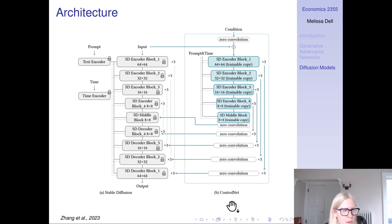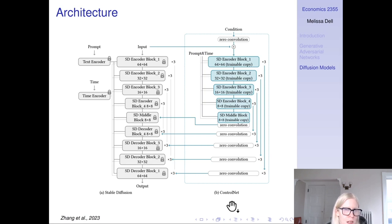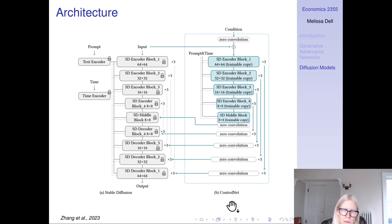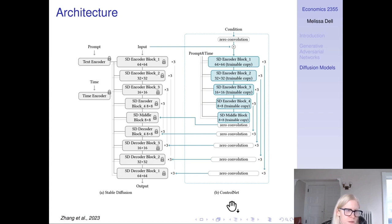The basic idea is that they're going to freeze stable diffusion because they don't want to lose all the general-purpose knowledge that came from training on a totally massive amount of data. But then they're going to learn this control network — this conditioning network — that takes the control image as input, and it has connections across to the frozen diffusion model.